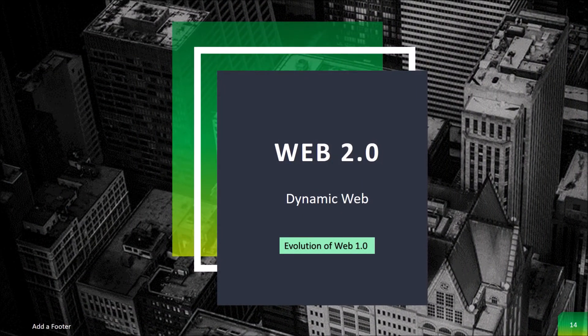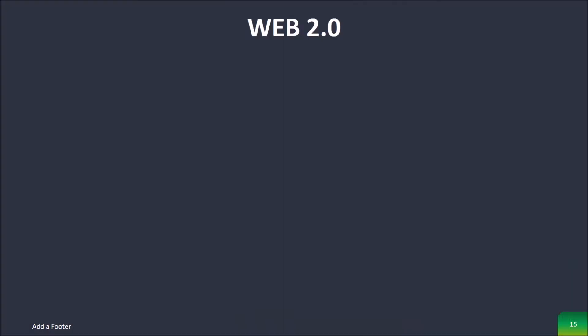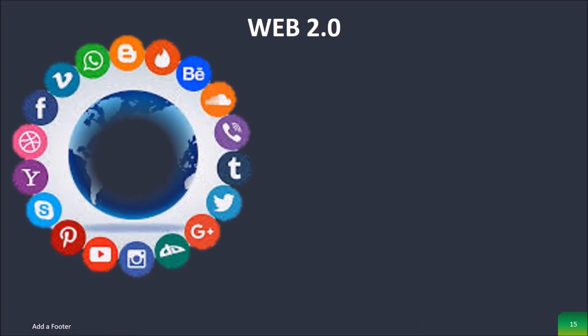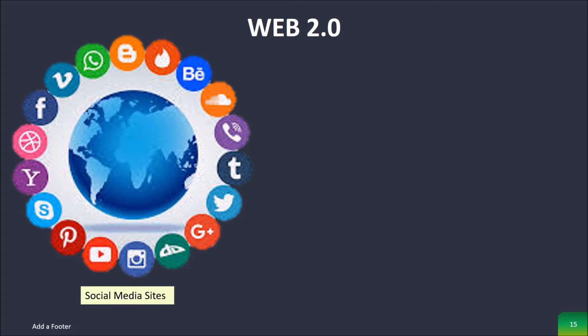Web 2.0 is the evolution of Web 1.0 by adding dynamic web pages. The user is able to see a website differently than others. Examples of Web 2.0 include social networking sites, blogs, wikis, video sharing sites, hosted services, and web applications.